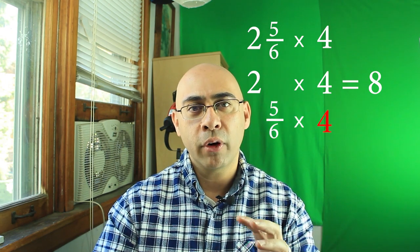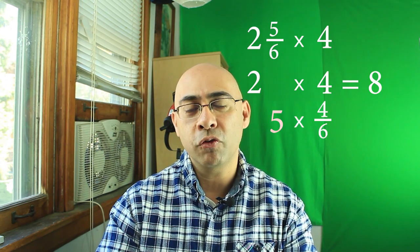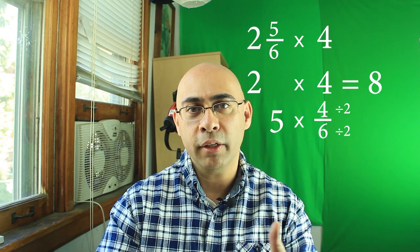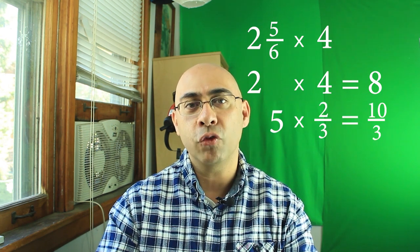Now five-sixths times four. I can switch the four and five around, so it's like saying four over six times five and I can reduce the four over six by two to make that into two-thirds. So two over three times five is ten over three.